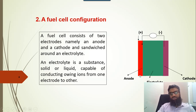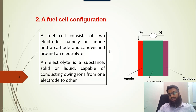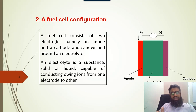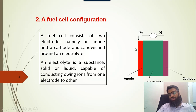So the basic configuration of the fuel cell — there are three major parts in a fuel cell: one is anode, the second one is cathode, and the middle portion is electrolyte. This is similar to batteries because in batteries we have anode, cathode, and in between anode and cathode we have electrolyte. But in the fuel cell we use hydrogen as an input source and oxygen as an input, while the output would be water and electricity. An electrolyte is a substance — solid or liquid — capable of conducting ions from one electrode to another electrode. This electrolyte is required to transfer the ions of the hydrogen from anode to cathode.